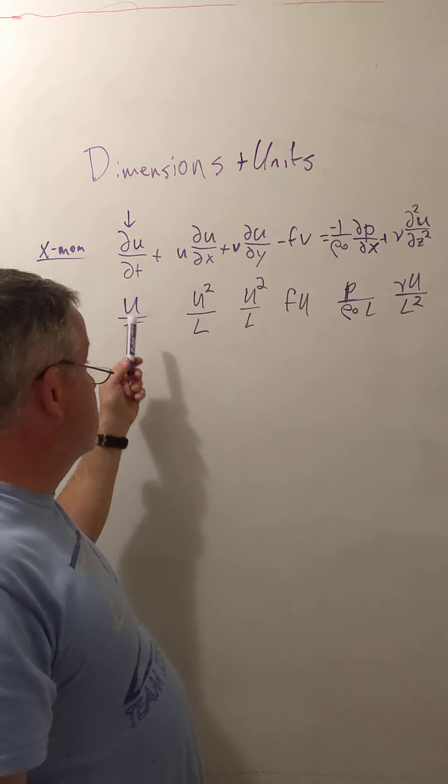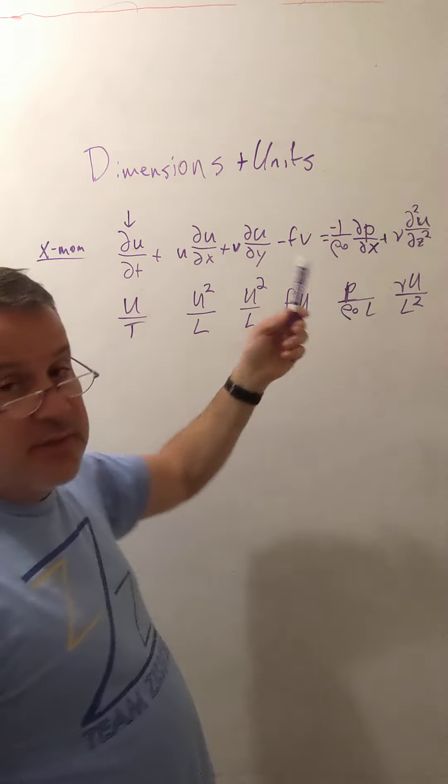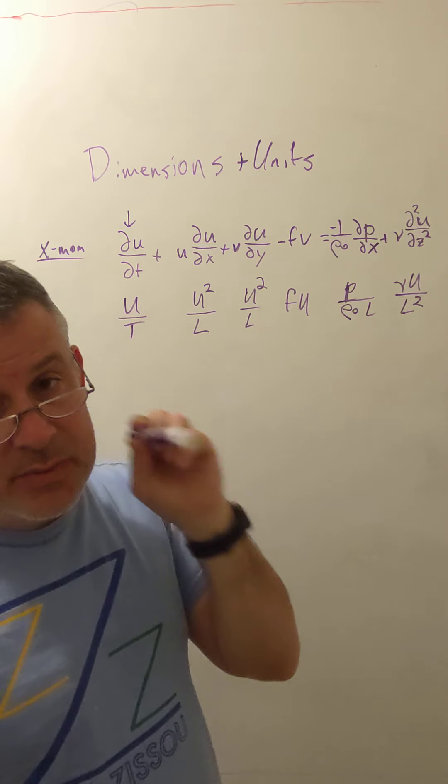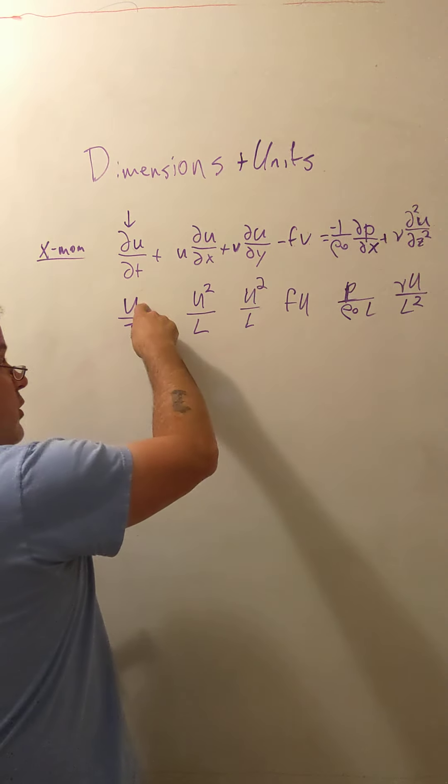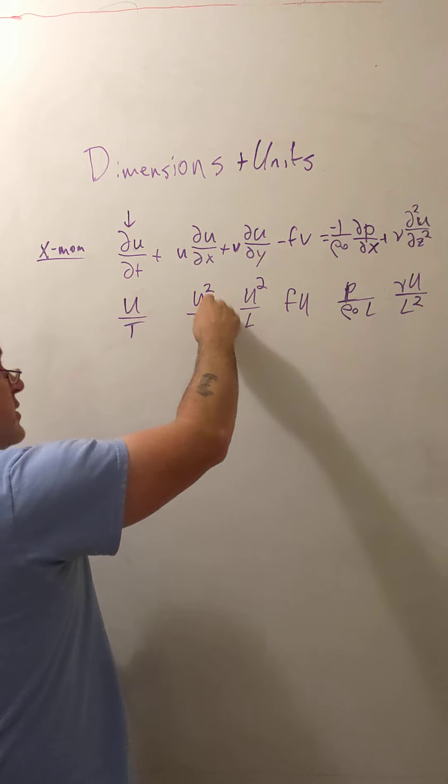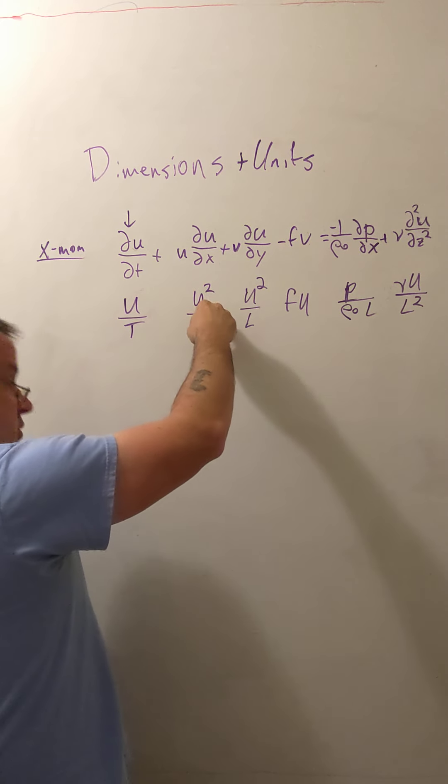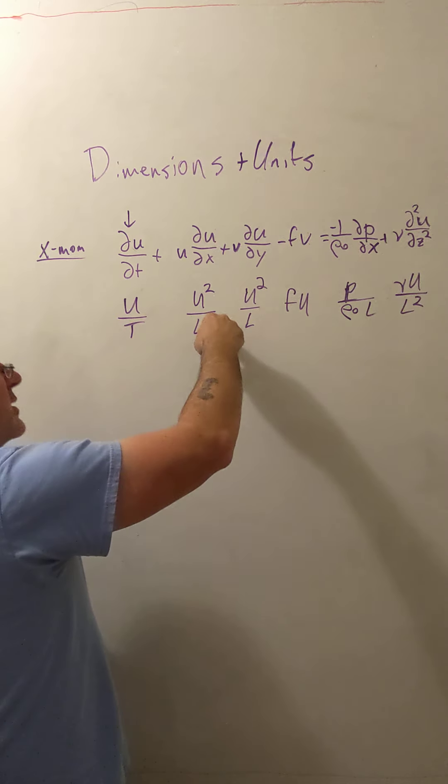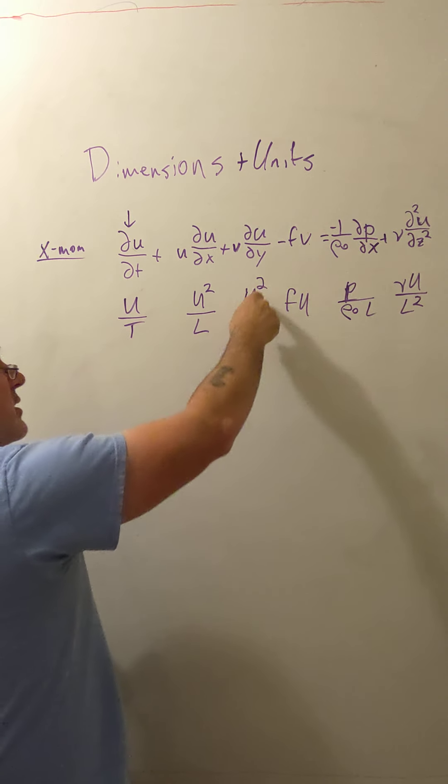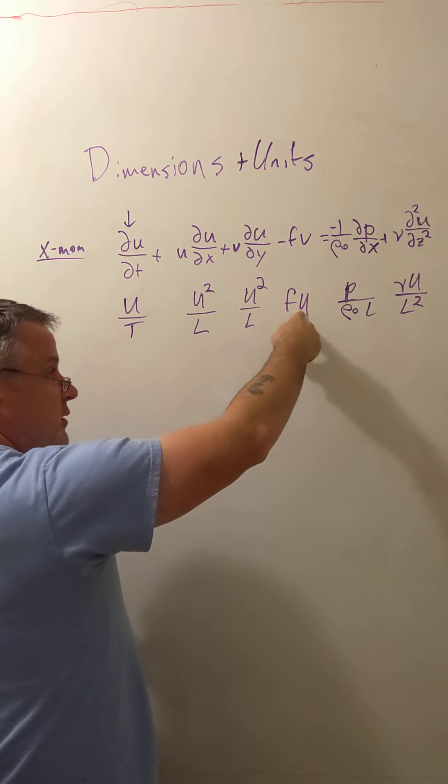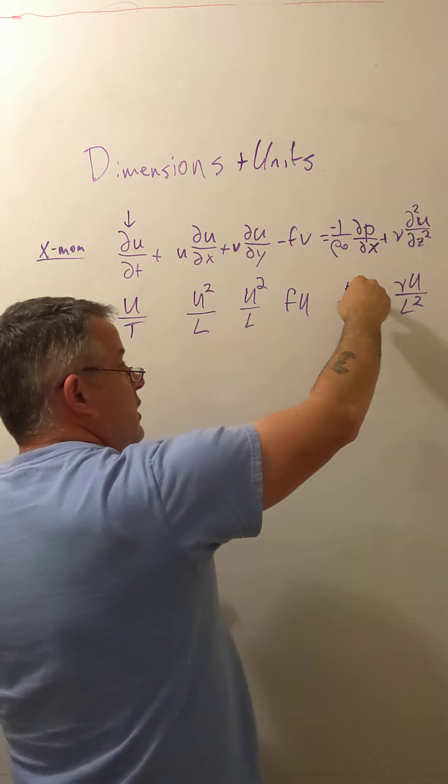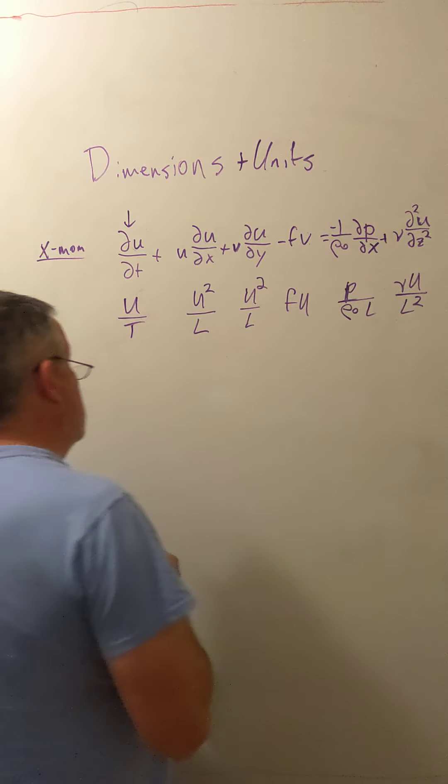And notice that all of them have to have consistent dimensions to be added together or set to equality. So u over t is length over time squared. u squared over l is also length squared. Length over time squared, two lengths in the velocity. One of them cancels out. Second one goes in the downstairs. f times u tells us the units of f are going to be 1 over time scale, so that we're still length over time squared. Similar here, similar here.